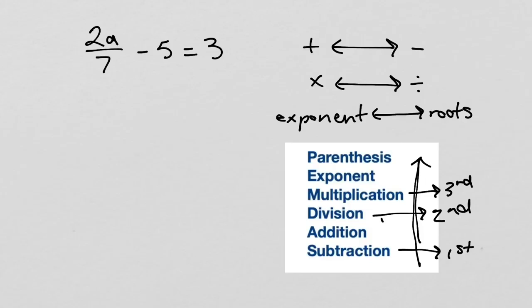We get rid of the minus 5 by performing the opposite operation on it. So, we will add 5 to both sides. The 5 will cancel out. 3 plus 5 is 8. So, now we have 2a over 7 equals 8.